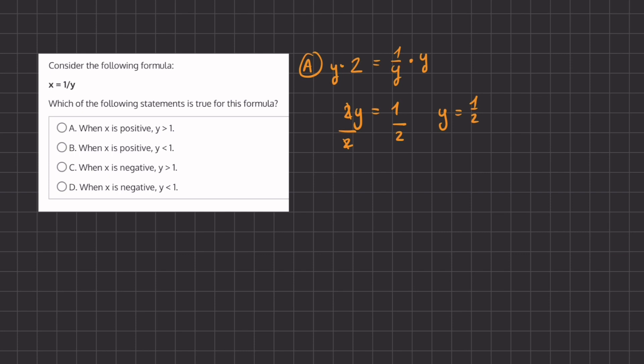So here we are given a positive value for x and a value for y that is less than 1 and not greater than 1, like stated in option A. Therefore, A will be eliminated, and we can move on to option B.